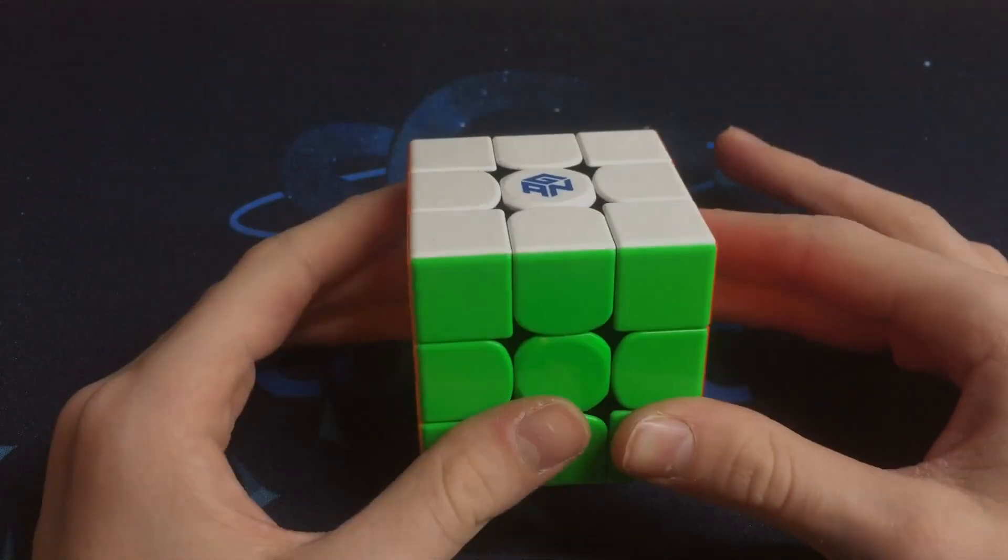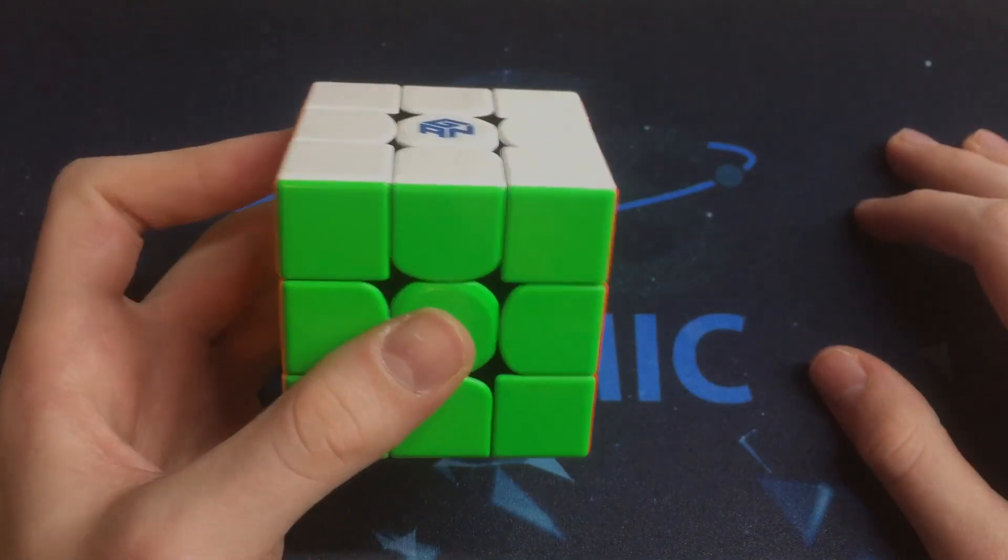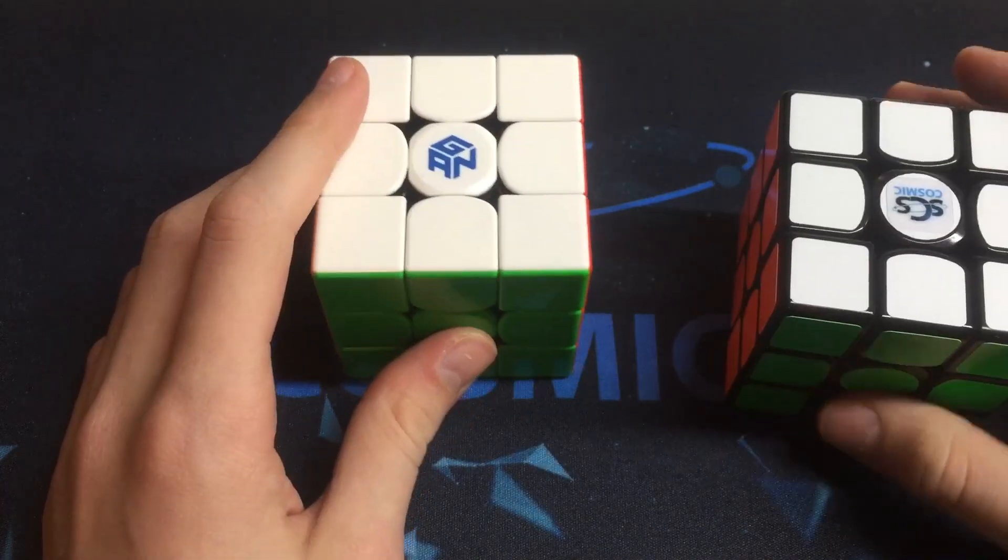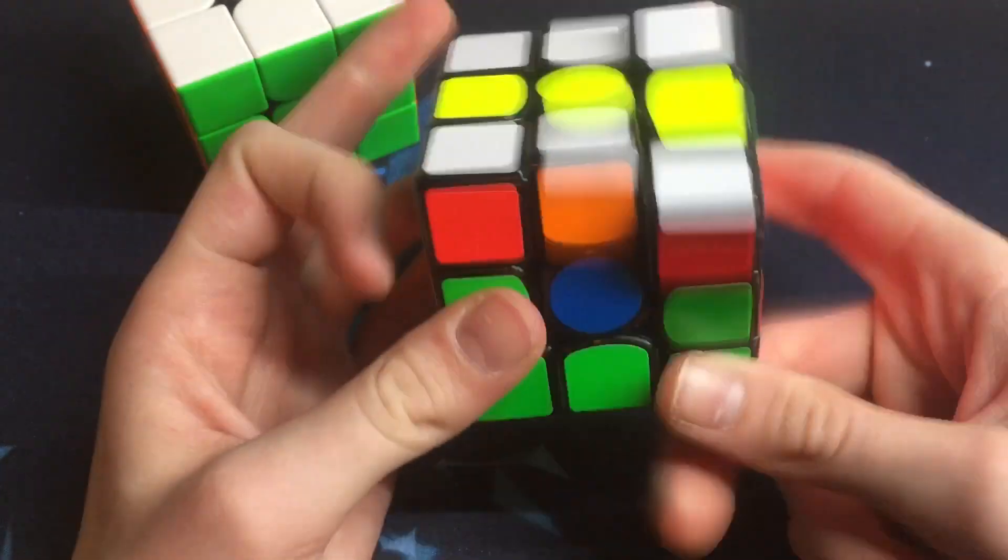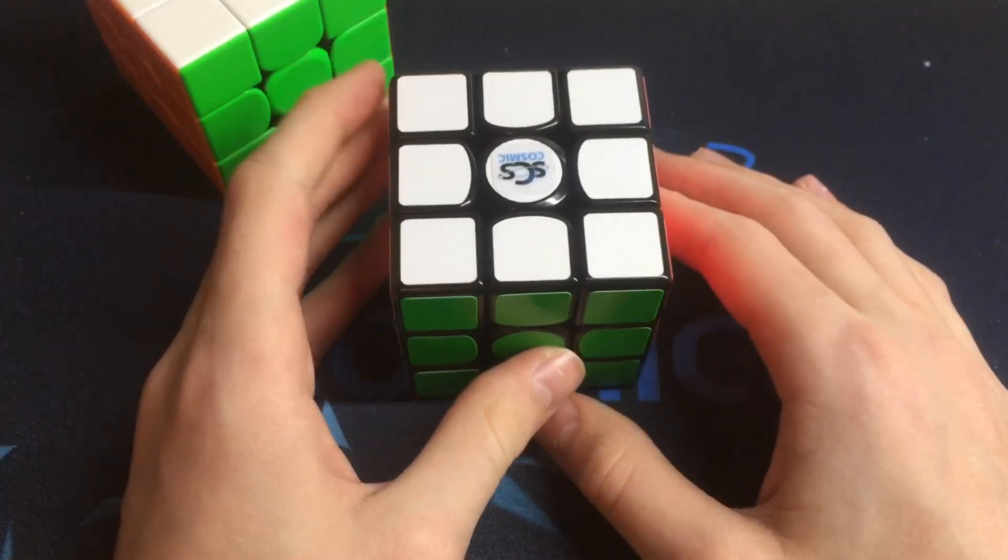This is the Gan 356X. I really love this cube. It's very buttery, very smooth. It's actually tied main with my SM, my Cosmic SM, which I very really enjoy.